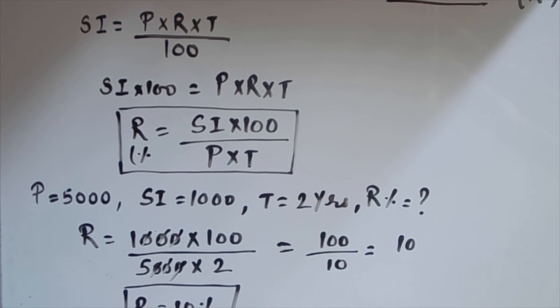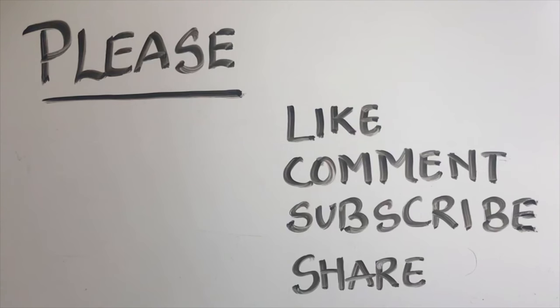This is how for any values for principal amount and time period, you can calculate rate of interest by using this formula as simple interest times 100 over principal amount times T. Thanks for watching, please like, comment, subscribe and share my videos.